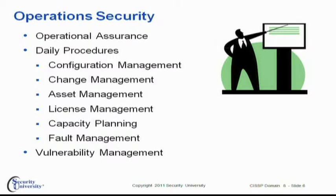In the area of operational security, we start with an overall goal of operational assurance — making sure that anything going on operationally is trustworthy and reliable, as we would expect. Key procedures within day-to-day operations include configuration management, change control, asset management, and license management. We want to ensure we have enough licenses to demonstrate that all commercially-sourced software is legal, enough capacity to avoid availability problems, and fault management or fault tolerance to keep equipment and software from breaking down. We also need to be cognizant of vulnerability management: the latest patches, the latest hacker attacks, and what we've discovered through various vulnerability testing procedures.